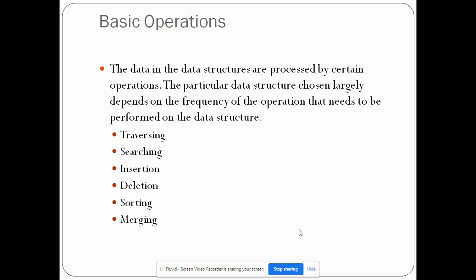If we want to arrange the elements in a predetermined sequence — such as chronological, highest to lowest, lowest to highest, or alphabetical — then we use sorting. And the next one is merging: if we want to combine the elements of two data structures, then we call that merging. So these are the basic operations.